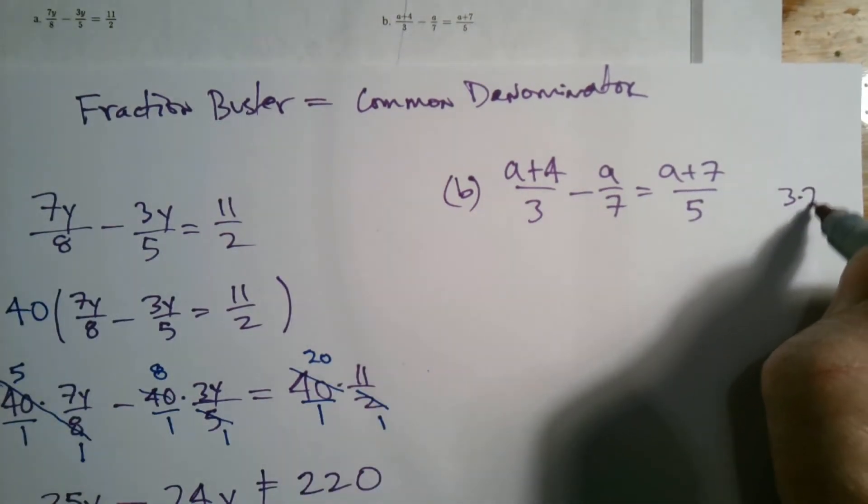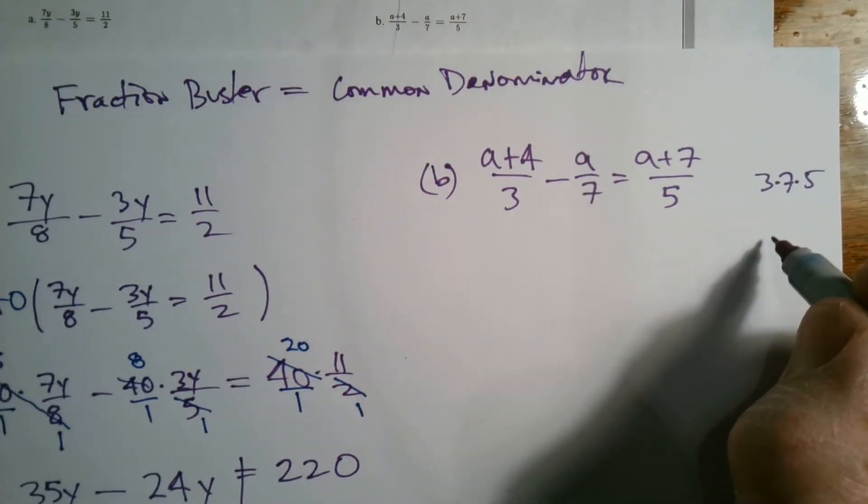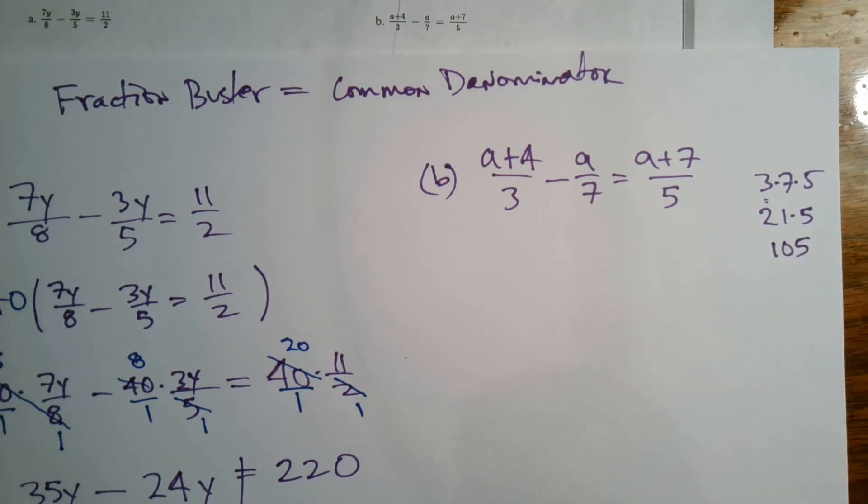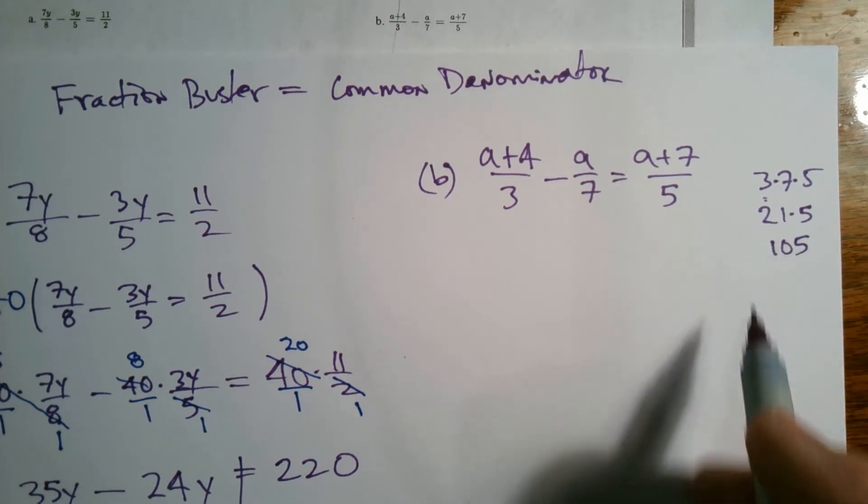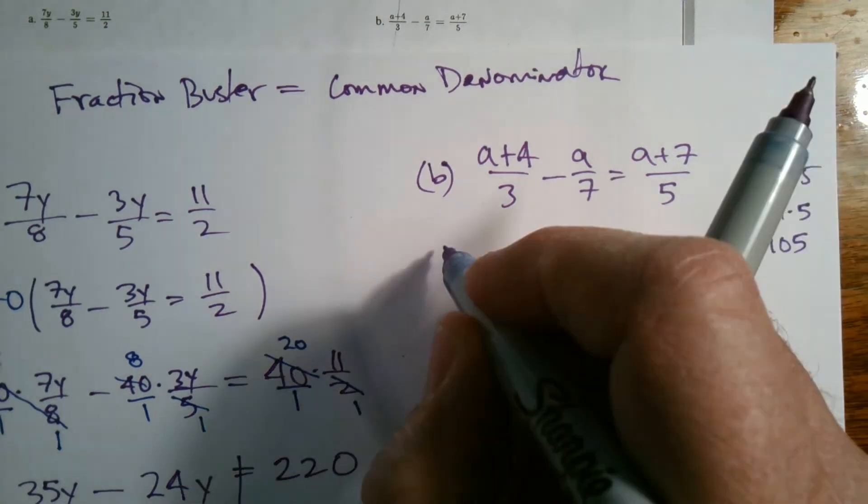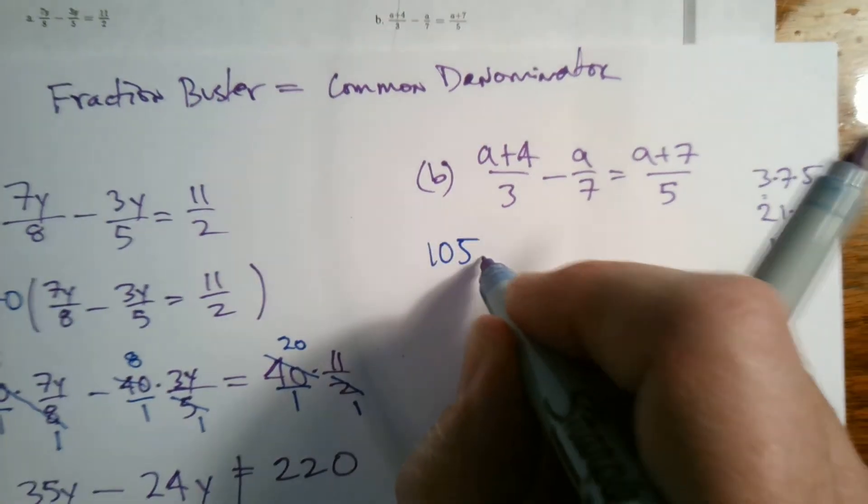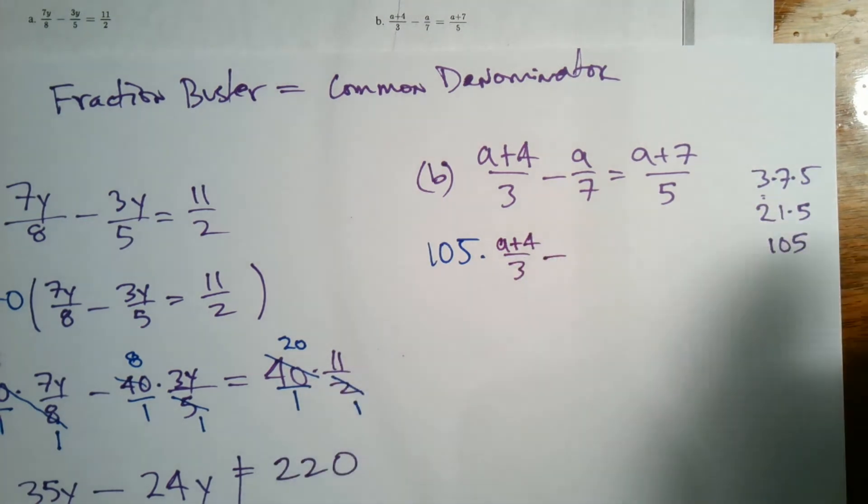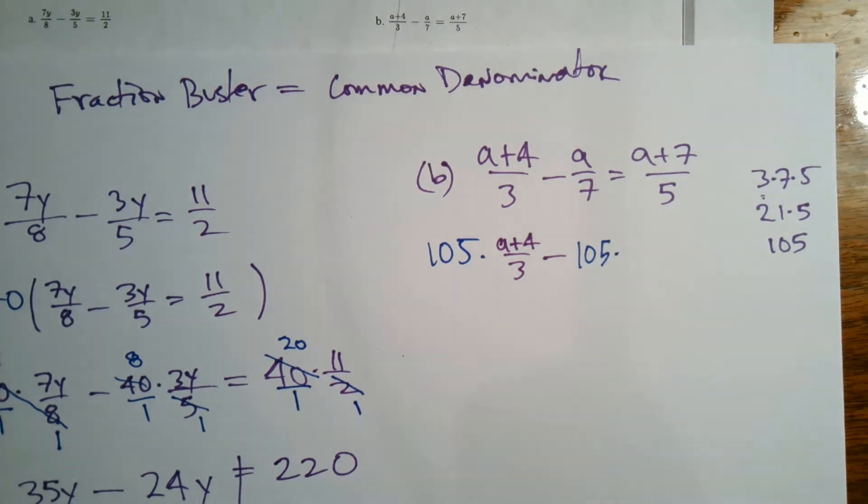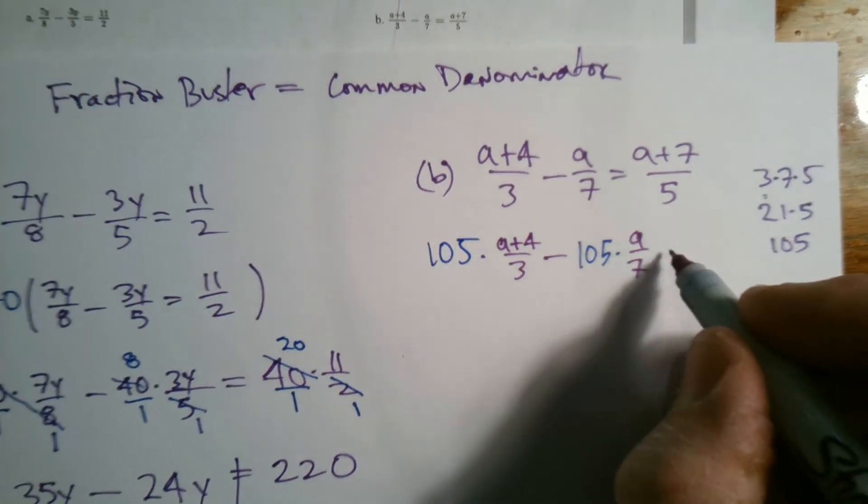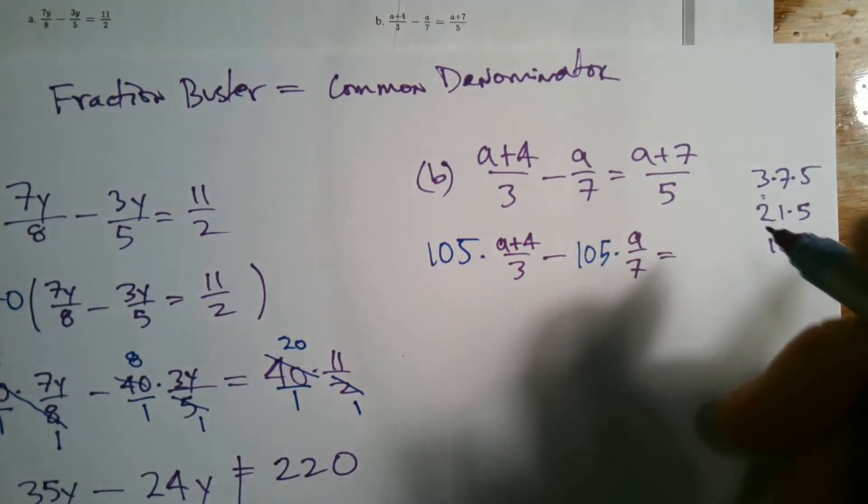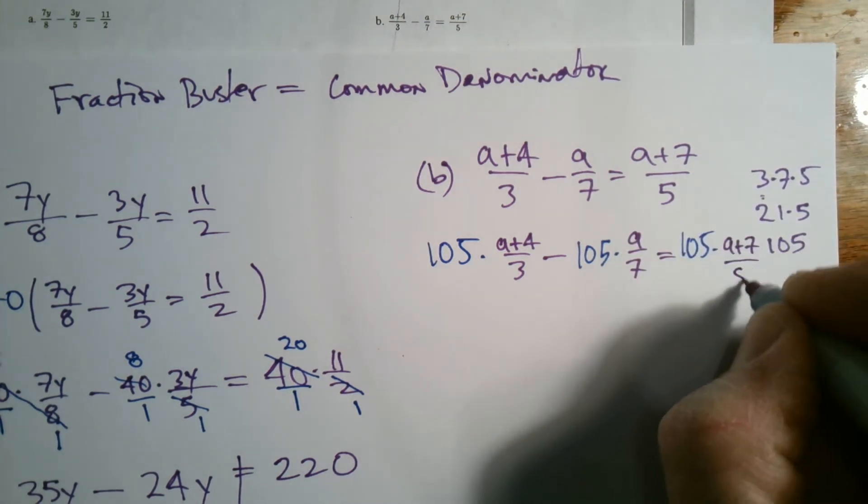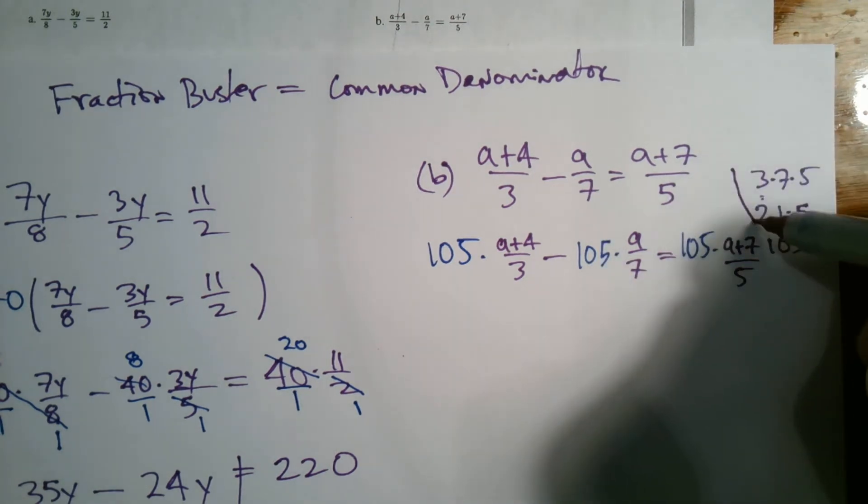So the only number that all of them will go into is 3 times 7 times 5. I got to figure out what that is. So 3 times 7 is 21, 21 times 5 is 105. So that's going to be my fraction buster. So I'm going to take each of these and multiply by 105. So 105 times a plus 4 over 3 minus 105 times a over 7 equals 105 times a plus 7 over 5.